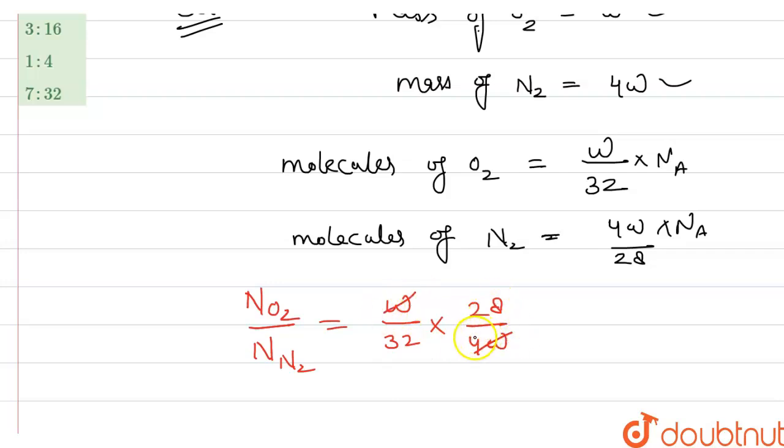W, w cancel out and that is 4, 7, 28. So the ratio will be 7 by 32 means 7 is to 32. B option is required.